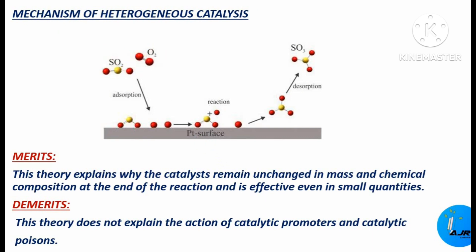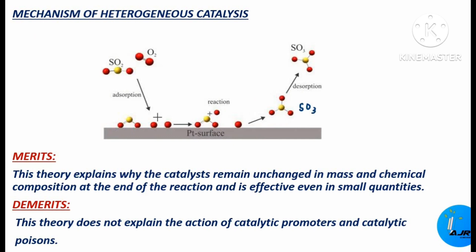In the first step, sulfur dioxide and oxygen approach the surface of the platinum catalyst. In the second step, sulfur dioxide and oxygen get adsorbed on the surface of the platinum by physical adsorption or weak van der Waals forces. In the third step, a reaction takes place between the oxygen and sulfur dioxide, forming a bond so that sulfur dioxide is converted to sulfur trioxide.